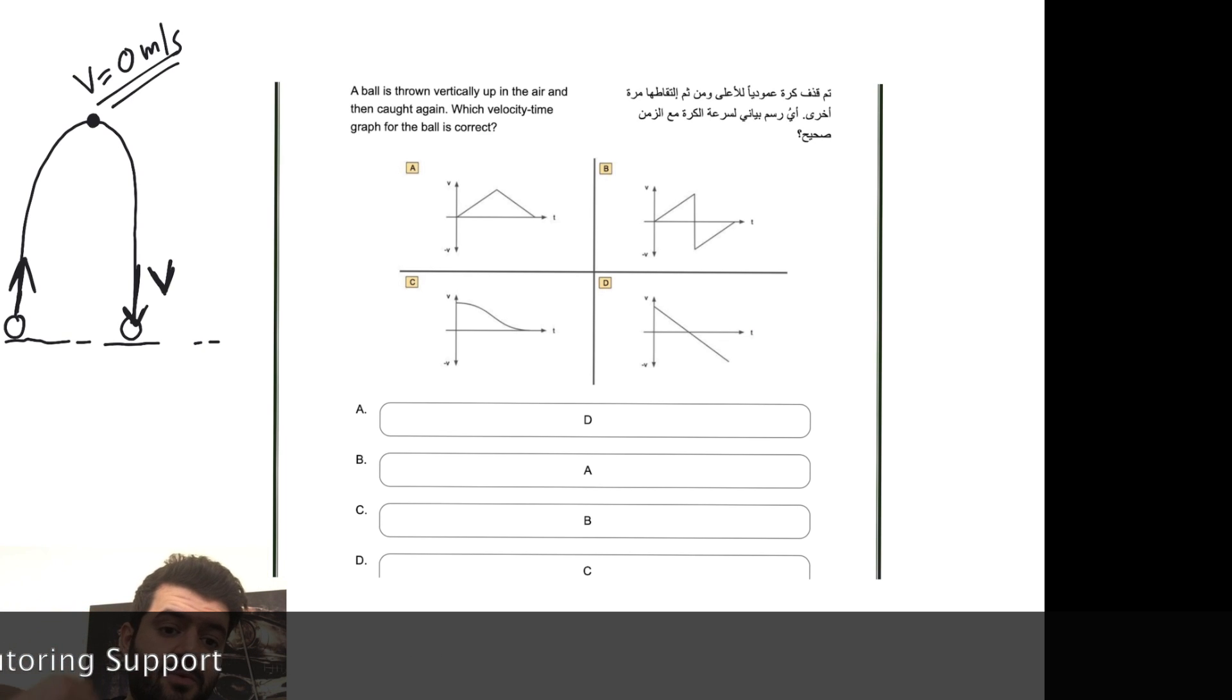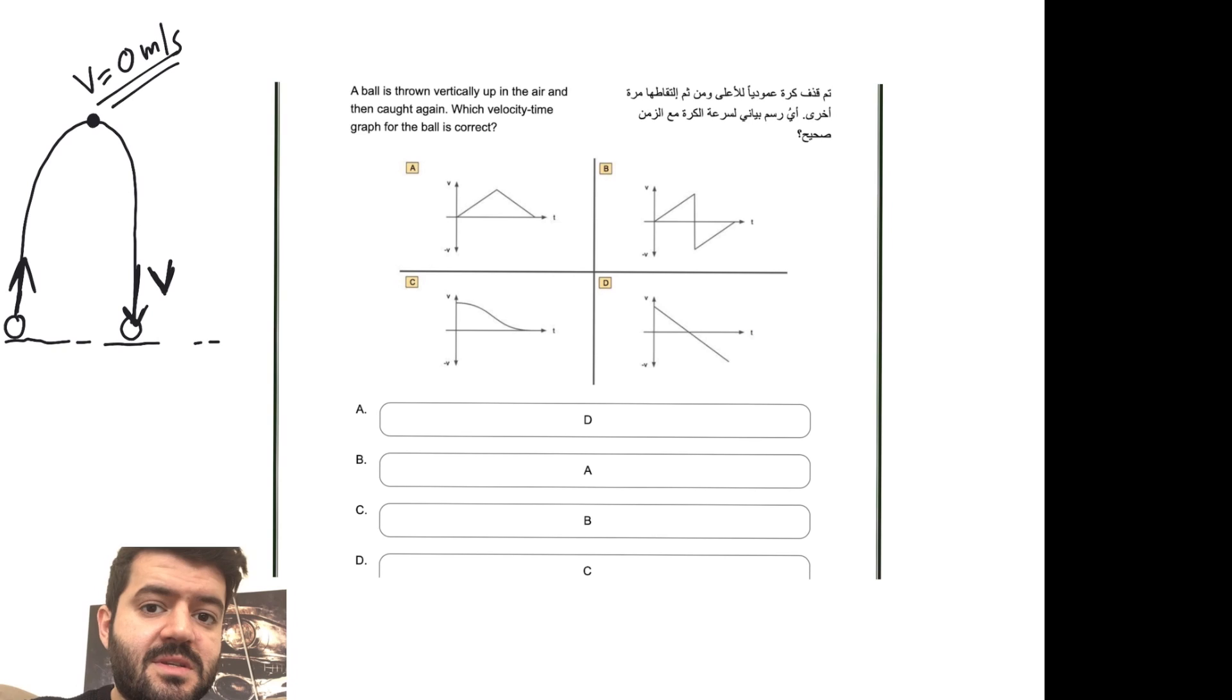If the velocity is zero, let's say meters per second, we're expecting a motion in the following fashion: you throw something up, reaches a maximum height, stops for a bit, and goes down. Now take a look at the options that you have in front of you. Which one of those graphs best represents the following case? Let's start off with A.